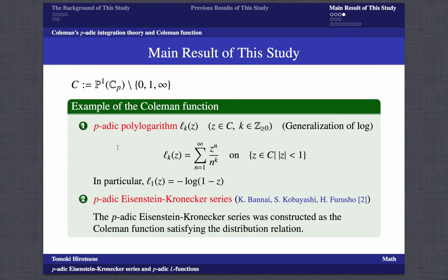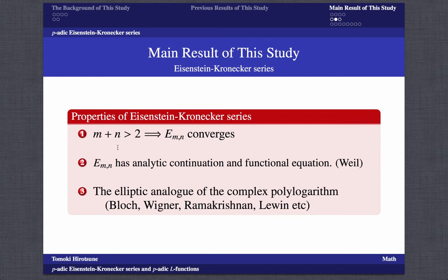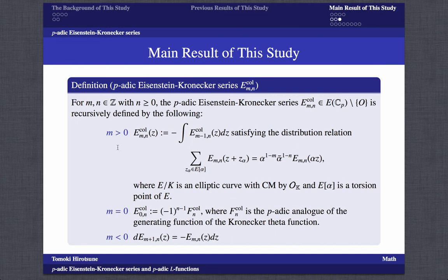We can give examples of Coleman functions as the p-adic polylogarithm and the p-adic Eisenstein-Kronecker series. The p-adic Eisenstein-Kronecker series was constructed as the Coleman function satisfying the distribution relation by Bannai-Kobayashi-Furusho. We define the classical Eisenstein-Kronecker series as follows. The Eisenstein-Kronecker series converges if m+n is greater than 2, and has analytic continuation and functional equation. The Eisenstein-Kronecker series is the elliptic analogue of the complex polylogarithm. The p-adic Eisenstein-Kronecker series is recursively defined using the distribution relation.